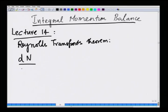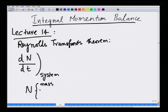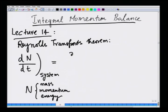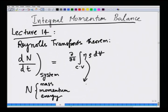Let me write down the Reynolds transport theorem. The rate of change of a quantity like mass, momentum, or energy for a system — where capital N can be any one of the three: mass, momentum, or energy — is equal to the rate of change of the same quantity over the control volume, where eta is N per unit mass. If N is mass then eta is 1; if N is momentum then eta is just v.